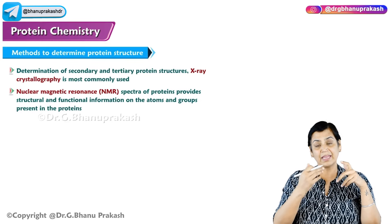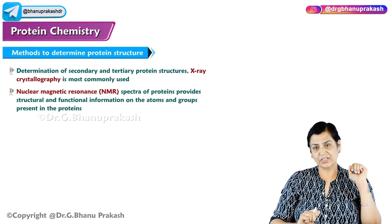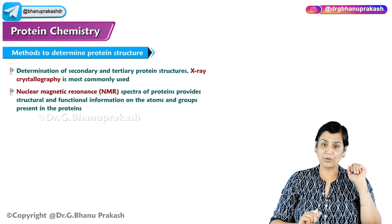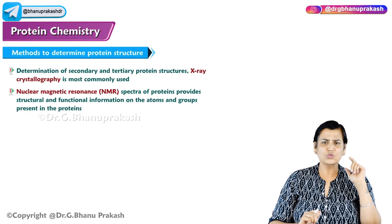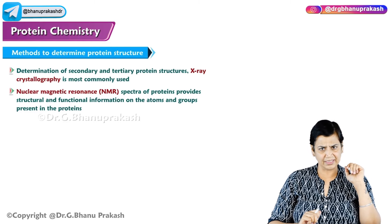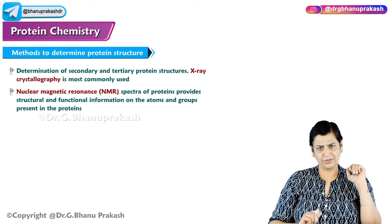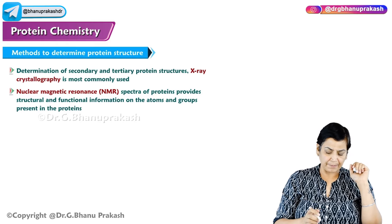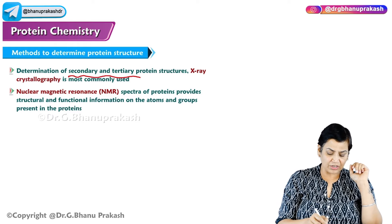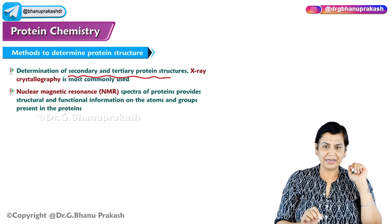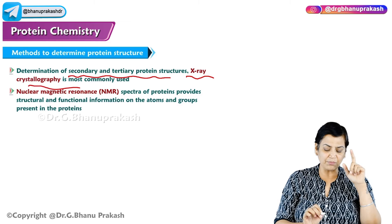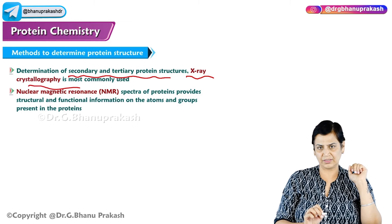How can we determine the protein structure? This is very important. There are so many techniques required to determine protein structure, but if we have to determine secondary and tertiary structure, X-ray crystallography is the most commonly used.